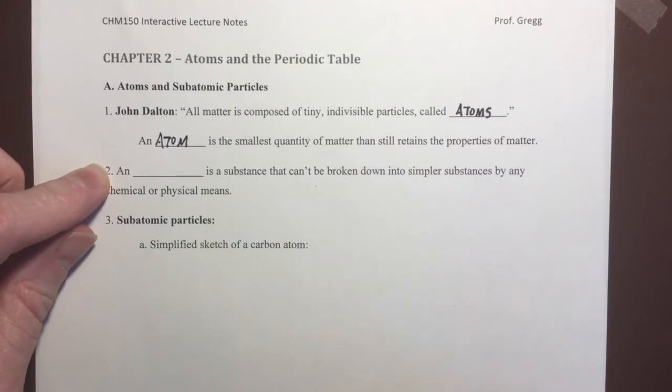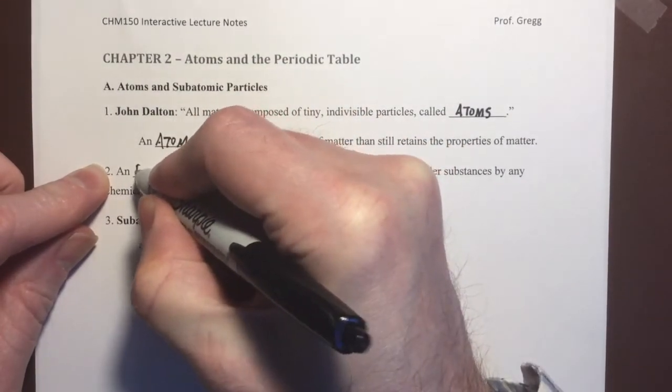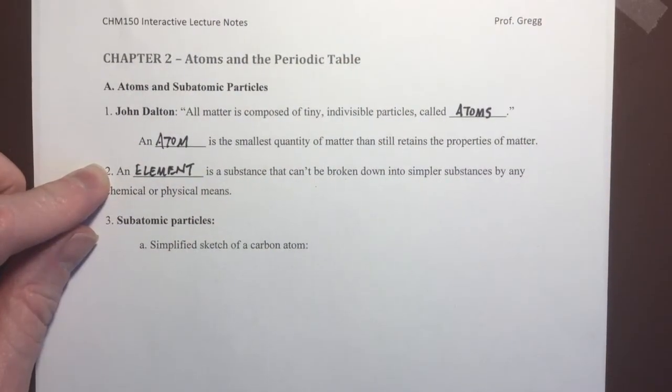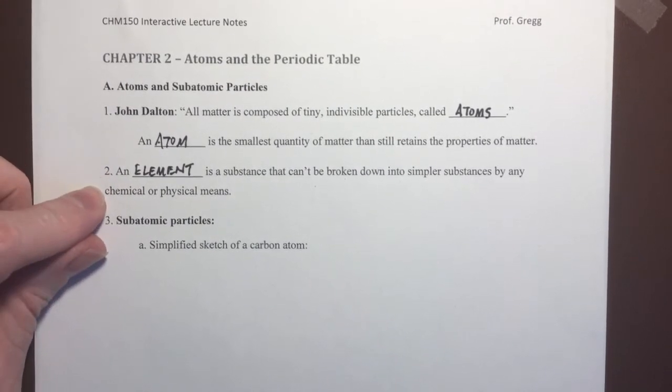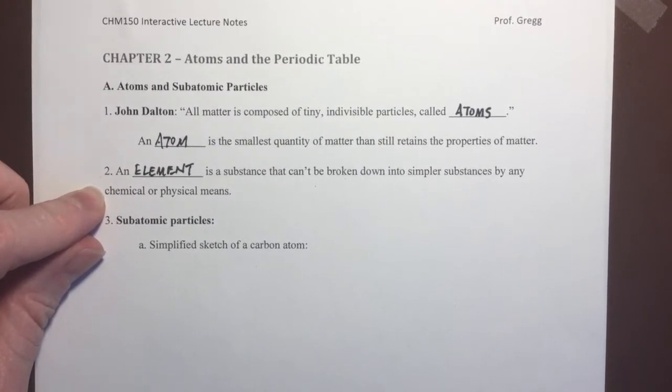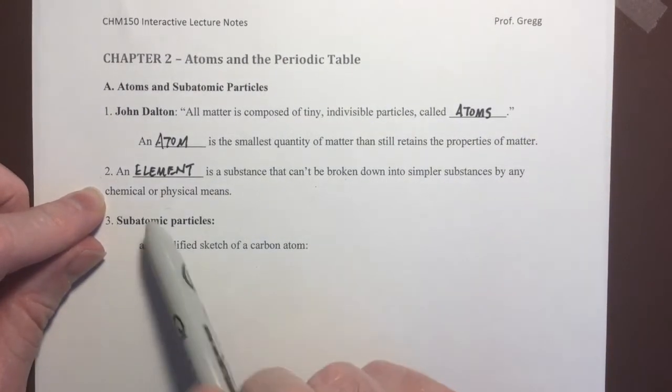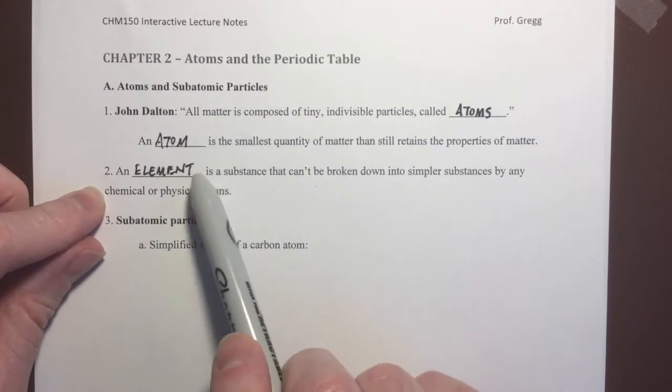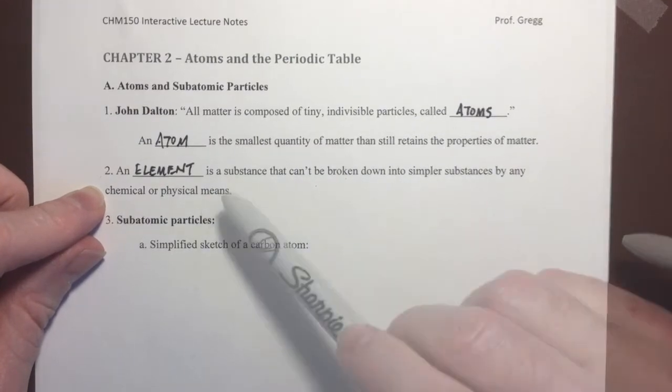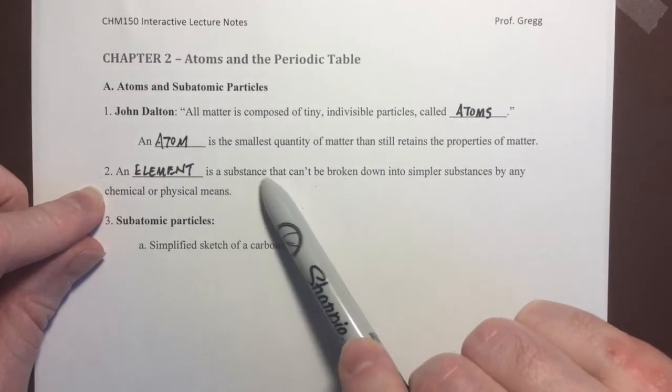An element is a substance that cannot be broken down into simpler chemical substances by any chemical or physical means. We know that we have a periodic table of the elements, and we talked about that in a previous chapter. Just want to emphasize, we do have particles that are smaller than atoms and that are more fundamental than elements, but they are not considered to be chemical substances.